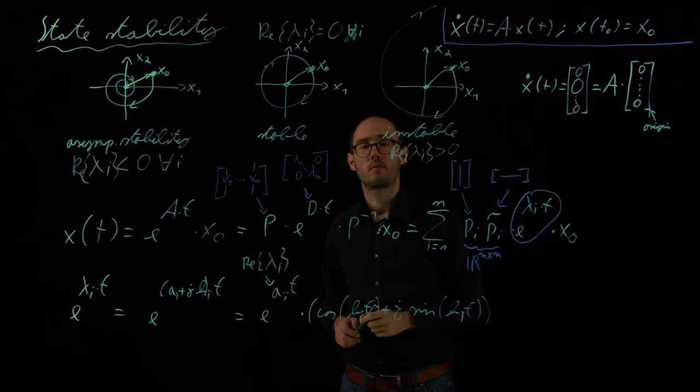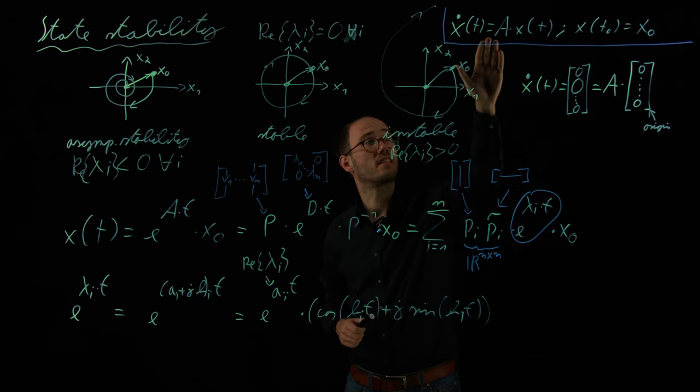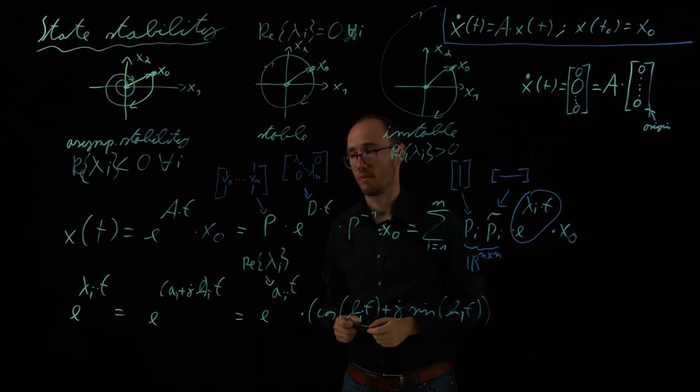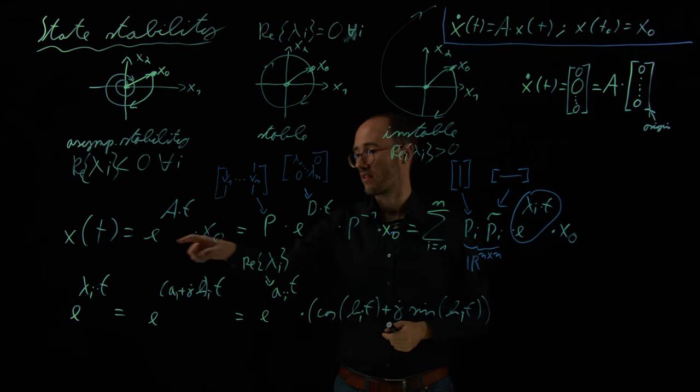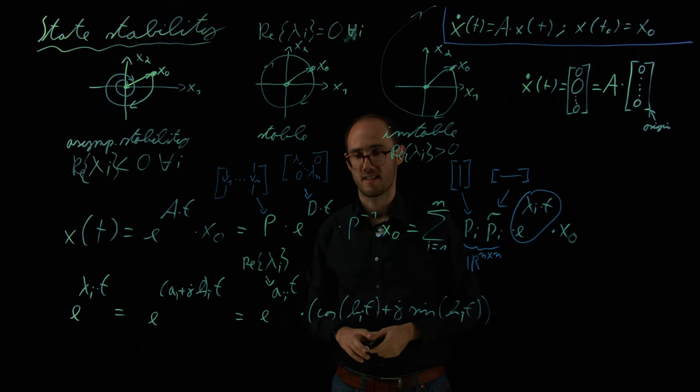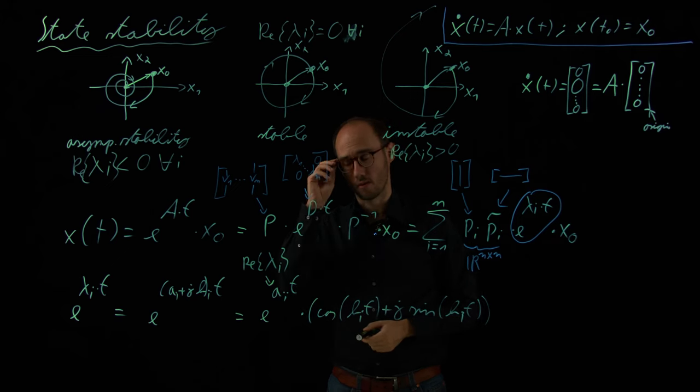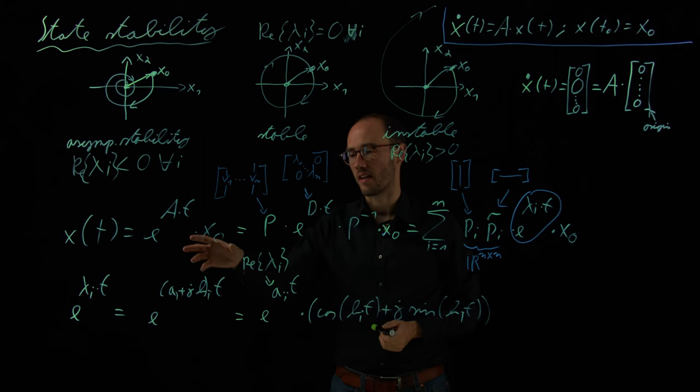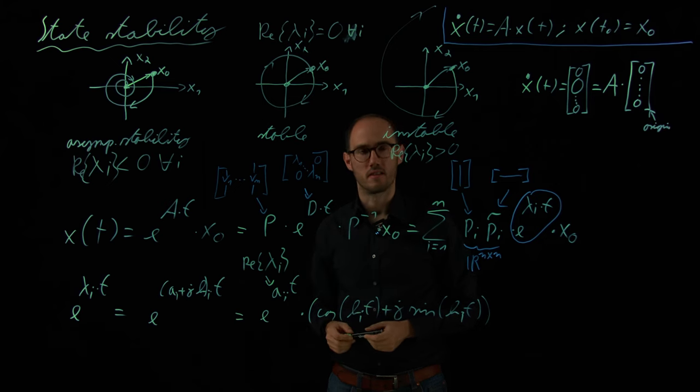With that, I hope that we could give you a very simple and low-level introduction into the state stability. We have seen that the eigenvalues of A are most important. We have here considered the simple case where we can do a diagonalization decomposition, which is not possible for all A's, but also for A's which are not fully diagonalizable. We basically can derive similar but a little bit more complex investigation regarding stability concepts, which we do not do for time reasons at that point. Thank you.